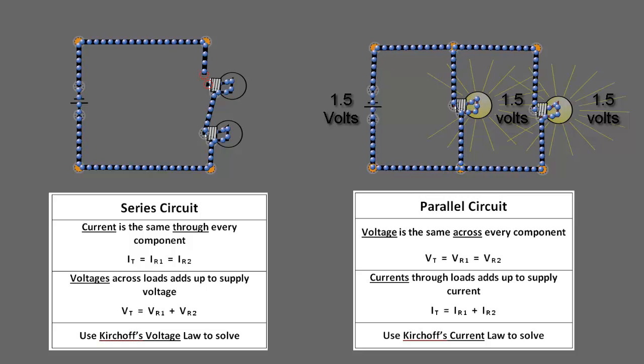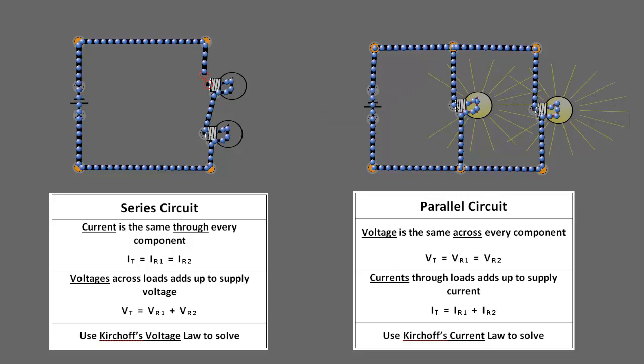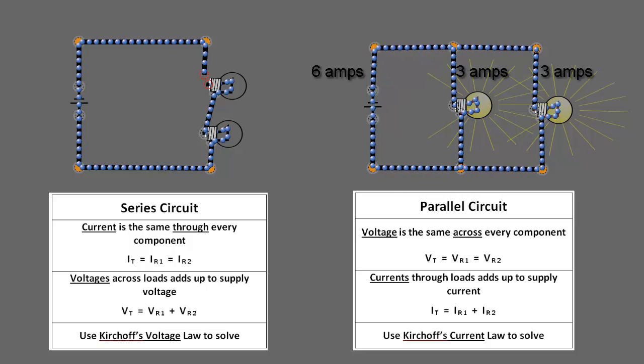Now, let's talk about another feature of parallel circuits. In a parallel circuit, the currents in the loads add up to the current coming from the battery. So in this particular case, the current through R1 plus the current through R2 is equal to the current coming out of the battery.